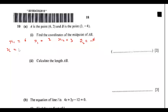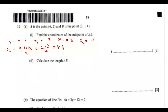Using the midpoint formula: x equals x1 plus x2 over 2, which is 6 add 3 over 2. This gives us 4.5.